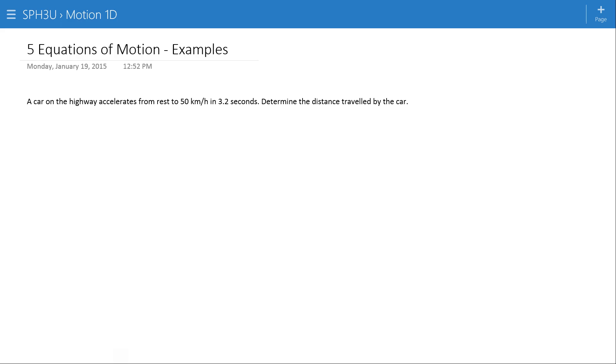A car accelerates from rest to 50 kilometers an hour in 3.2 seconds. Determine the distance traveled by the car. We're going to write out what we know. V1 of the car, it says it starts from rest. A trick to these questions is there's going to be lots of numbers that are obvious, but we have to catch those words in the question that mean numbers. Things like from rest, to a stop, an object was dropped. Here the car accelerates from rest, so that tells us the initial velocity is zero.